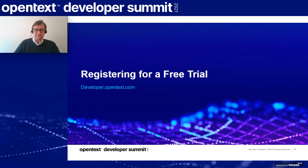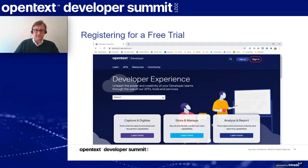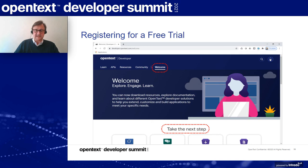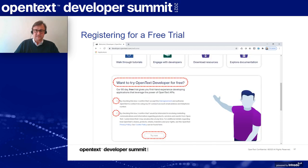That takes us to the next step, which is to register for a free trial. When you have your login and password, you can sign in at the developer.opentext.com website, and it will take you to another screen with a new menu that gives you instructions on how to get started. If you scroll down, you will get a section about how to register for a free trial. You need to check a few boxes.